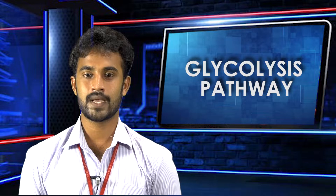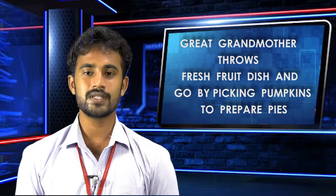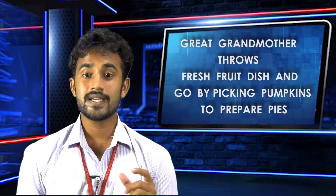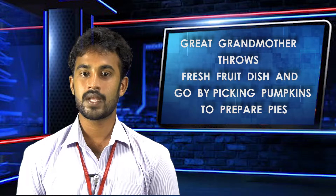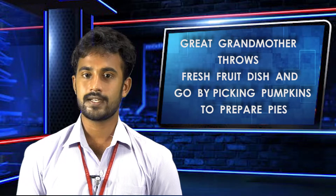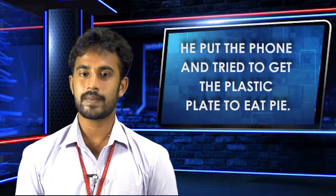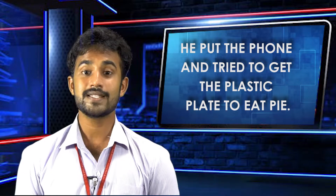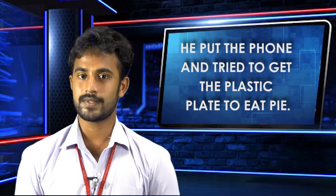Okay, for this you need to remember two sentences. My first sentence is: 'Great grandmother throw fresh food dish and go by picking a pumpkin to prepare a pie.' This sentence is to remember the intermediates involved in the glycolysis pathway, and there are 11 intermediates. My second sentence is: 'He put the phone and tried to get a plastic plate to eat pie.' This sentence is to remember the enzymes involved in the glycolysis pathway, and there are 10 enzymes.